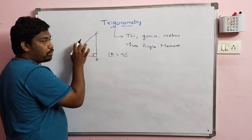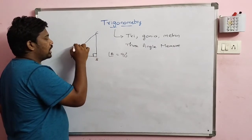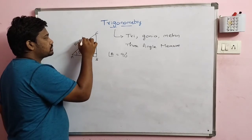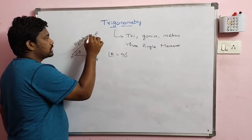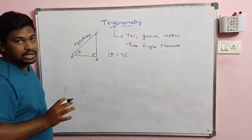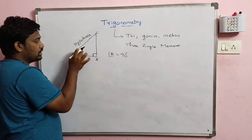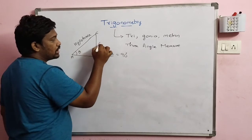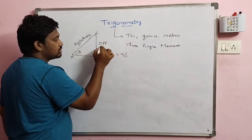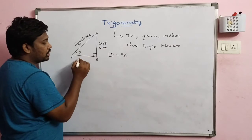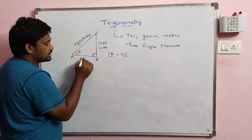According to the right angle triangle, the sides are named as follows: the longest side is called the hypotenuse. With respect to angle theta, the side opposite to it is the opposite side, and the side adjacent to it is the adjacent side.